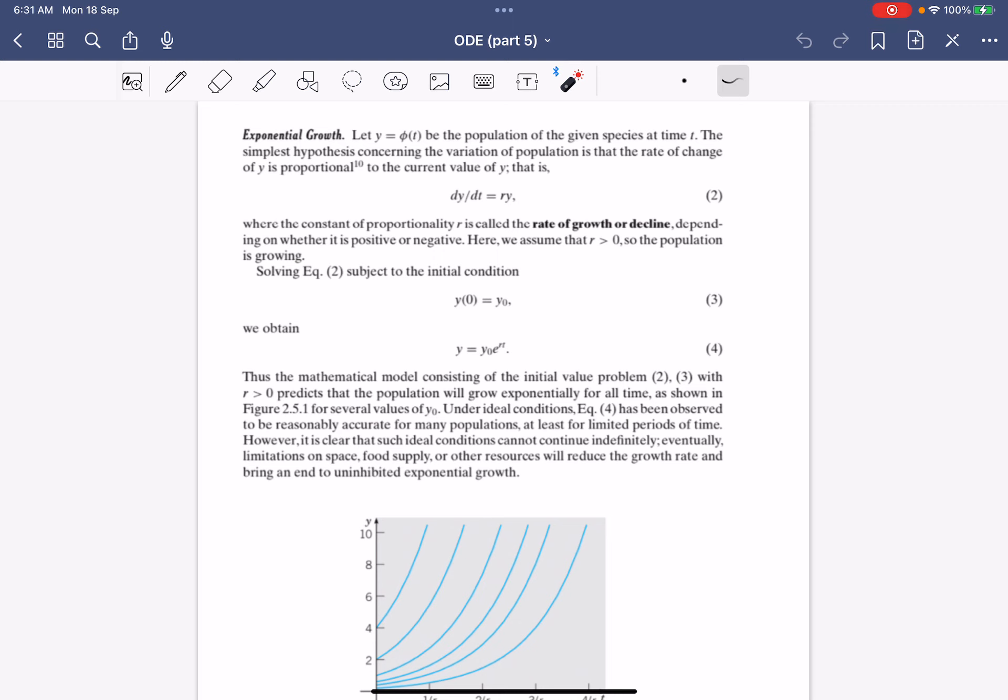Now one form of autonomous equation is known as exponential growth or the exponential model for a population. These are really used to model populations.